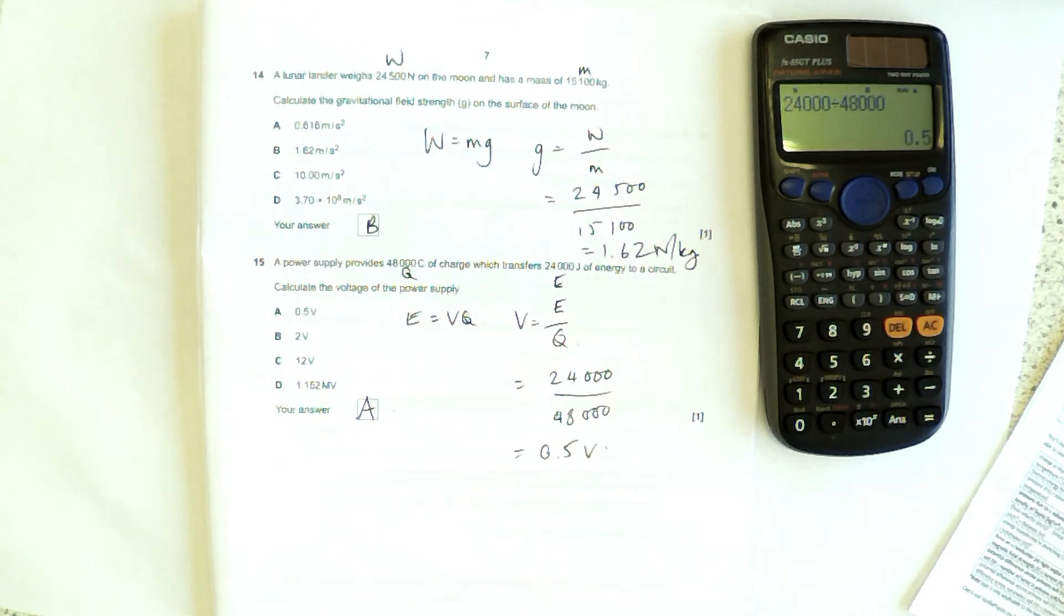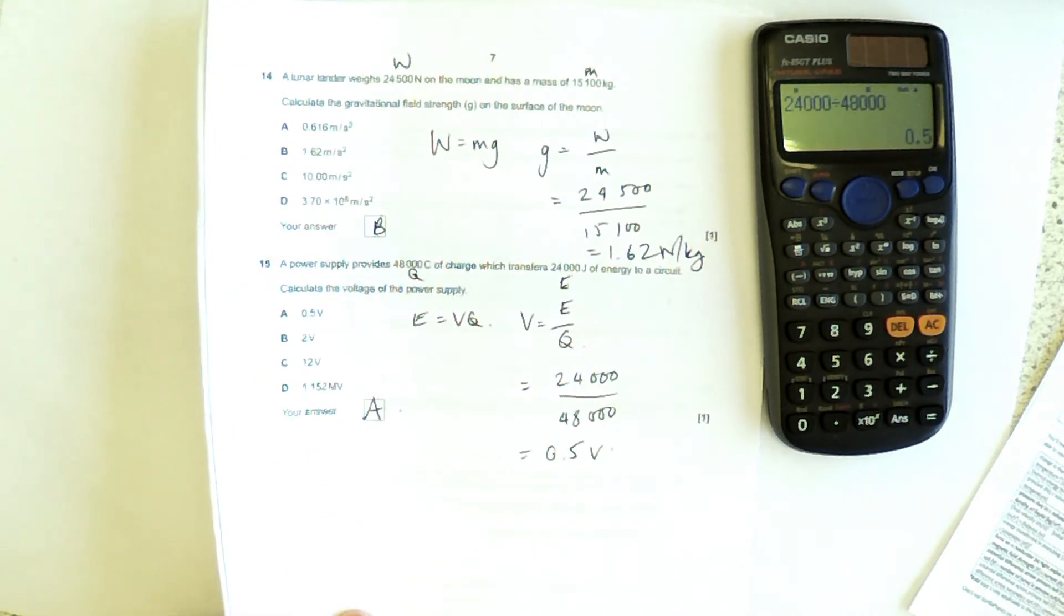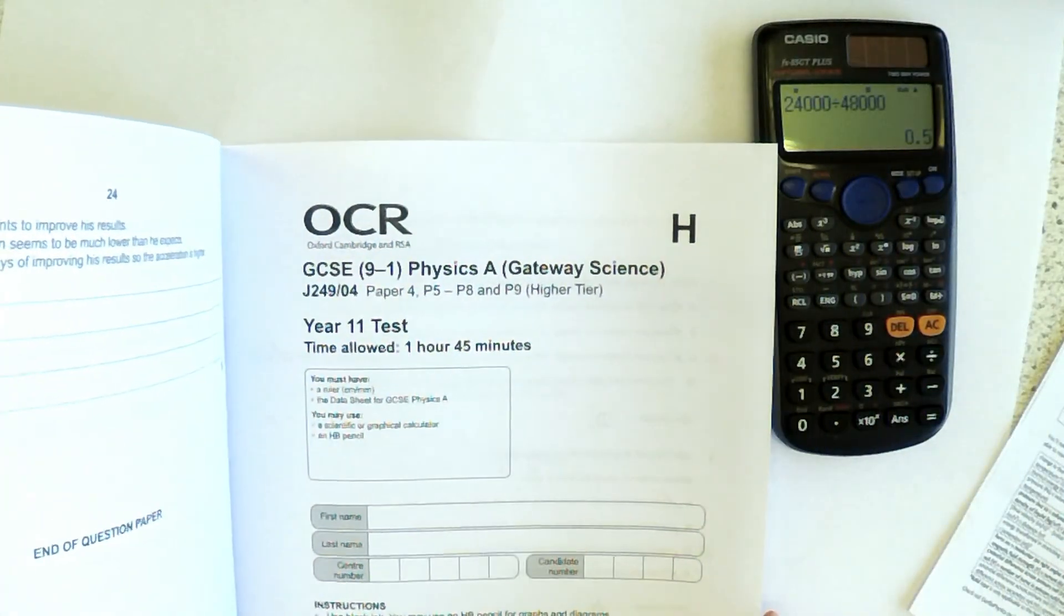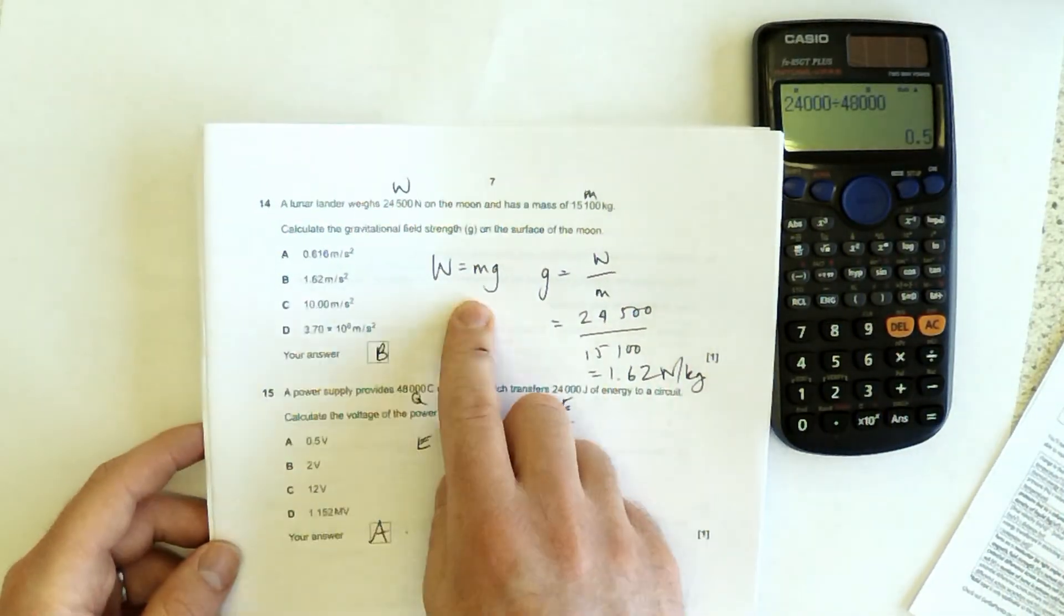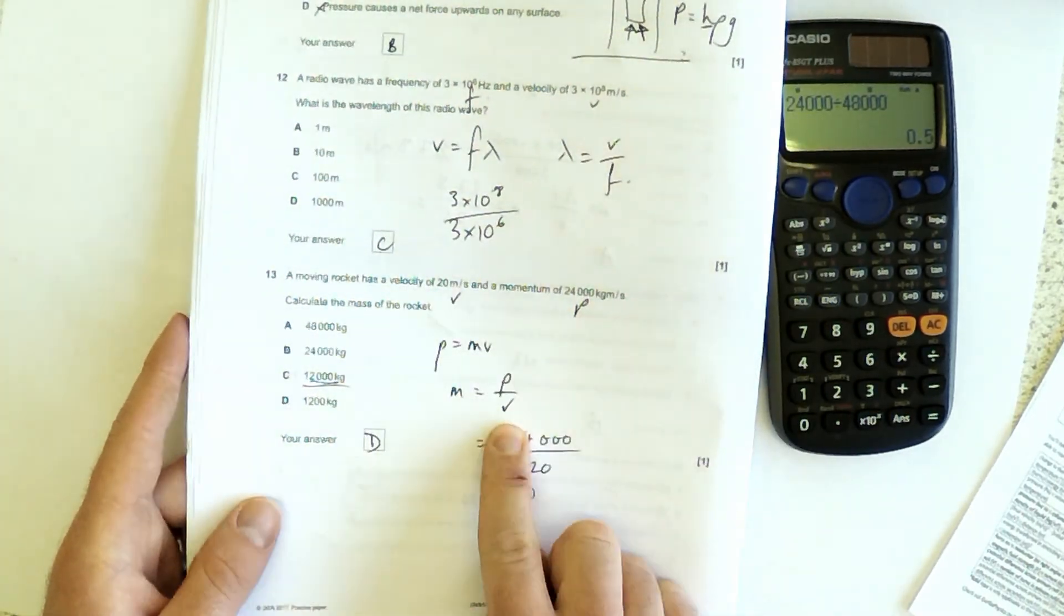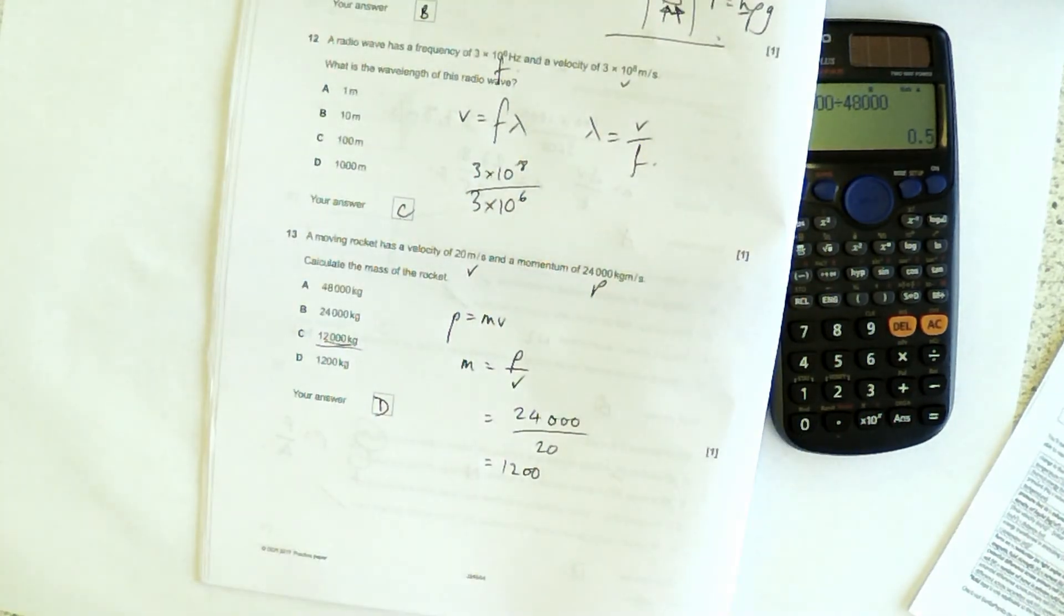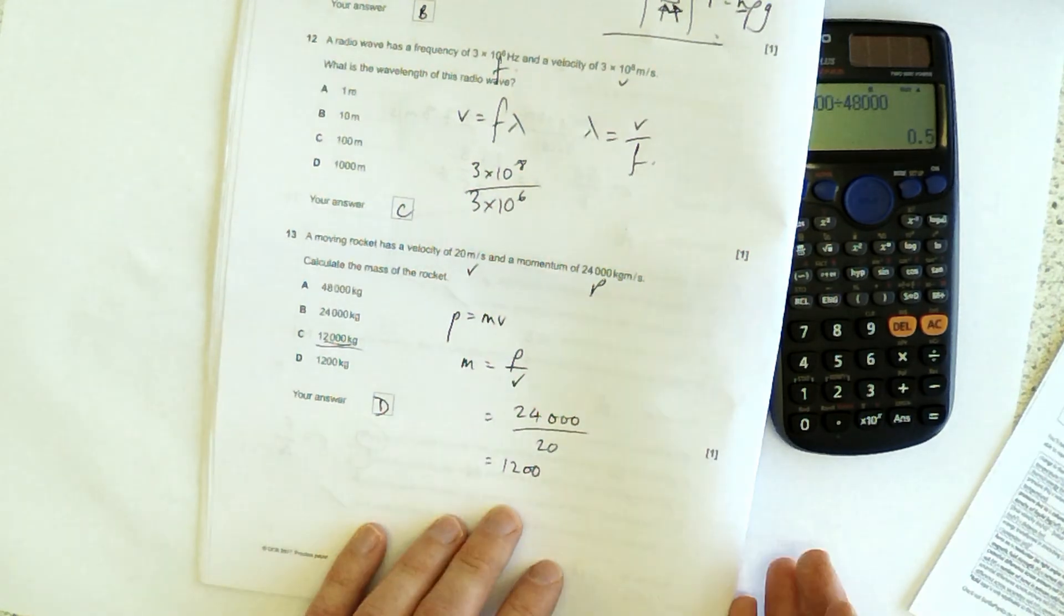It's worth noting here that some of those questions, even though they were in paper 4, which is units 5 to 8, they use equations that you first meet in P2, in the first half. So, you do need to be aware that they're always going to be using any equation in any possible exam.